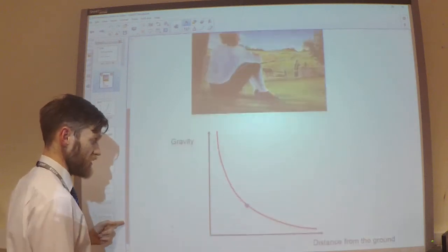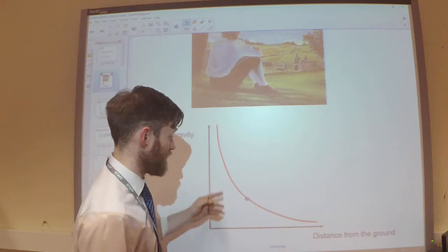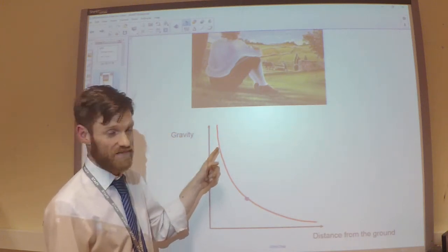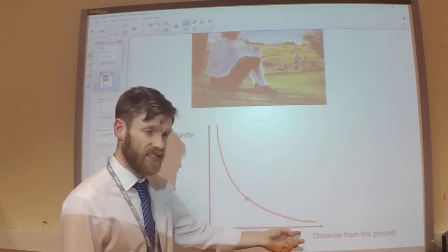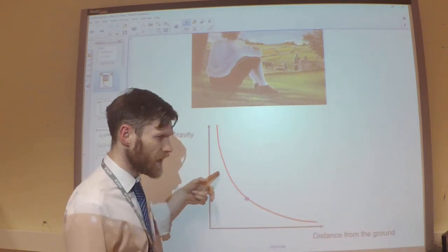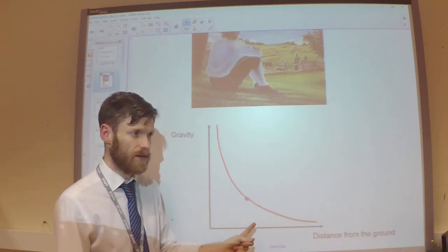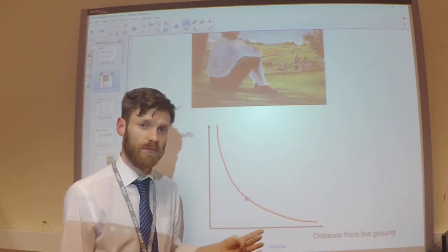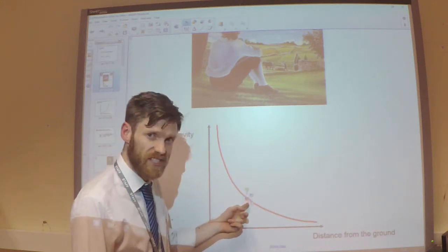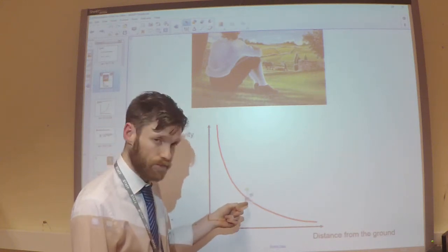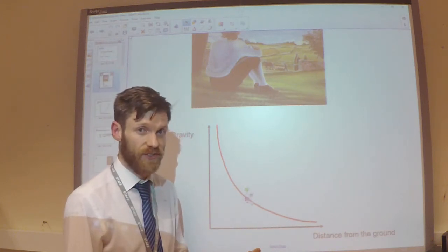And those of you that study physics will have seen this sort of graph before, an inverse square law, where very close to the earth's surface the gravity is strong but very far away the gravity is weak. And then he started to think, well okay, so the force of gravity is changing but how quickly is it changing? If I was to pick a random point here, how quickly is gravity changing at that point? This is where the idea of differentiation comes in.